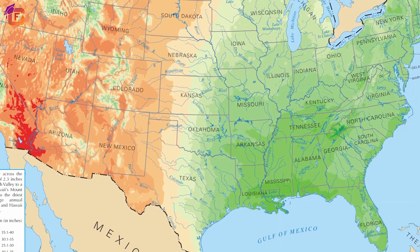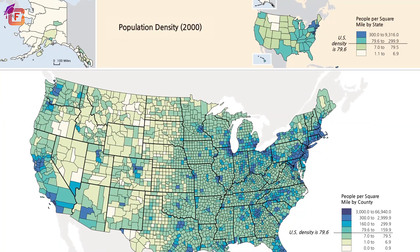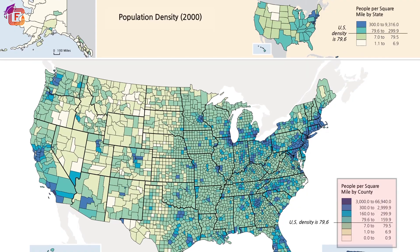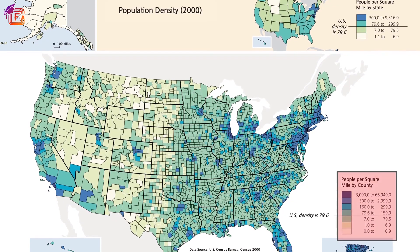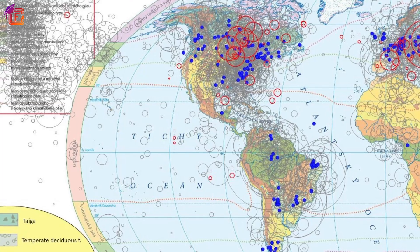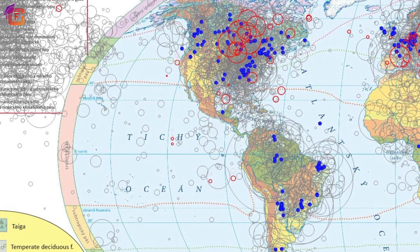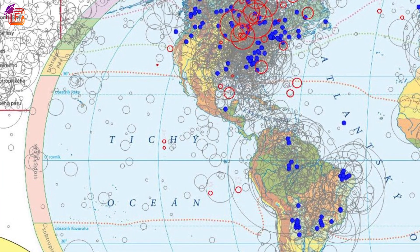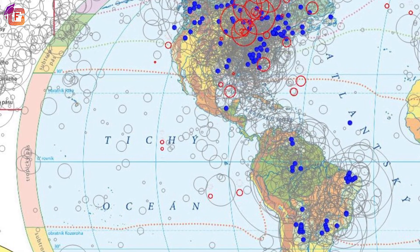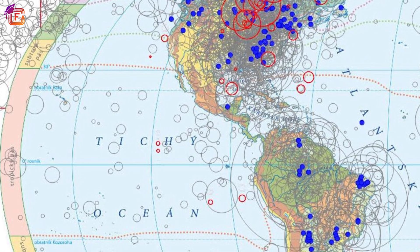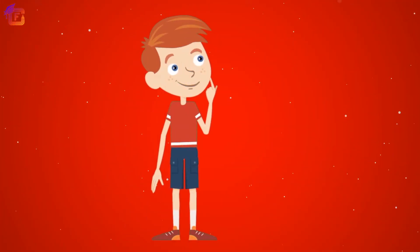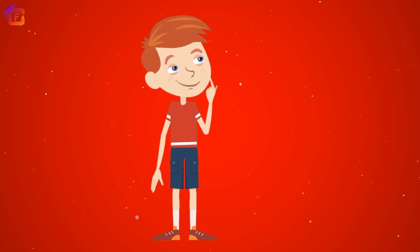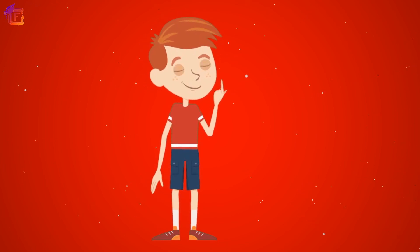Thematic maps are useful as they can be used for exploratory dimensional data analysis, confirming hypothesis, synthesizing spatial data by revealing patterns and relationships, and data presentation. Can you answer what the types of thematic maps are?